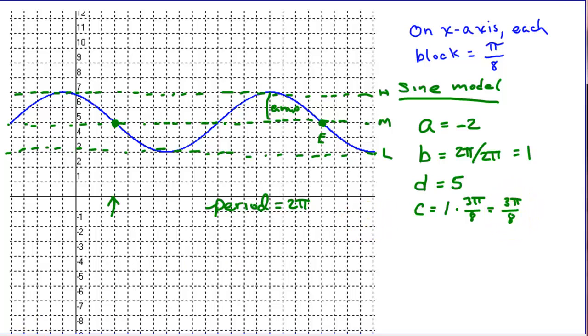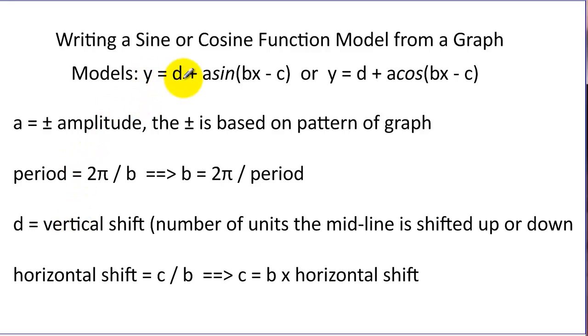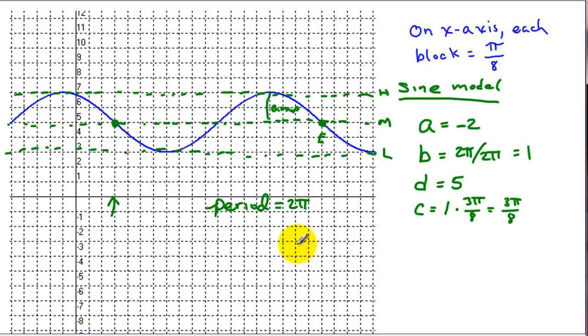Now we just plug that into our template. Our function here is y equals, let's see, d was 5, plus a, which was negative 2, sine. And now we have 1x minus our c. That sine function, if we plugged it in a calculator or graphed it, would produce this graph.